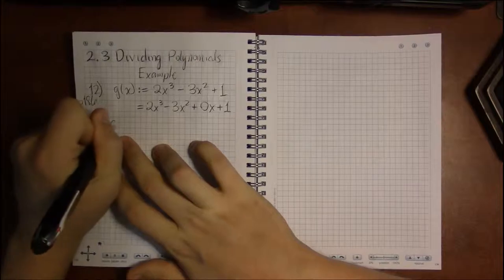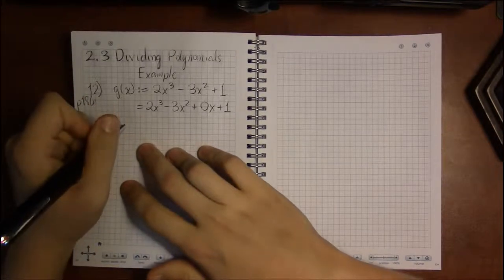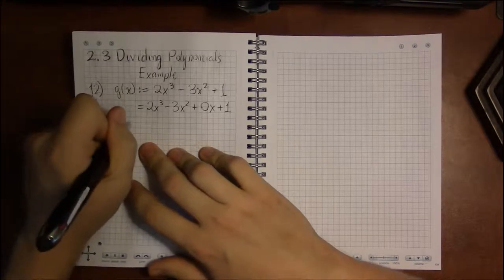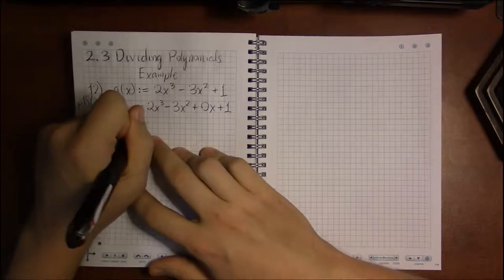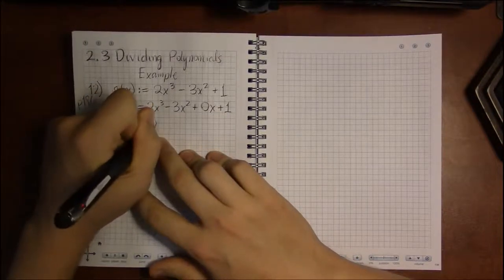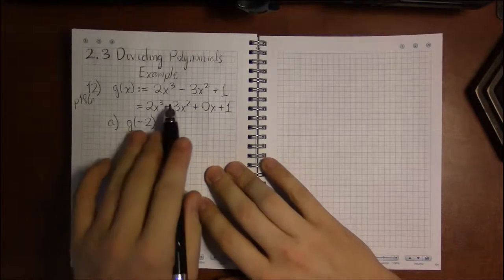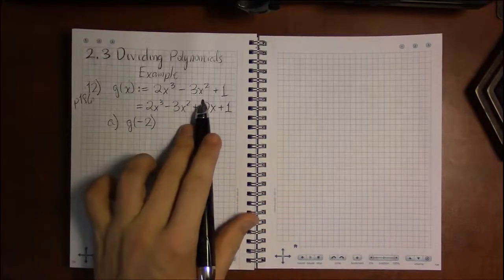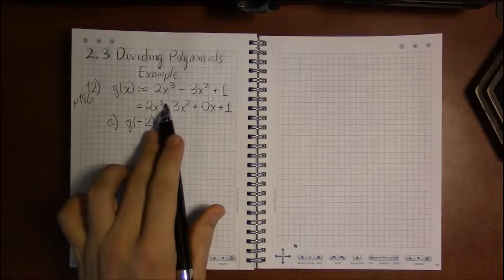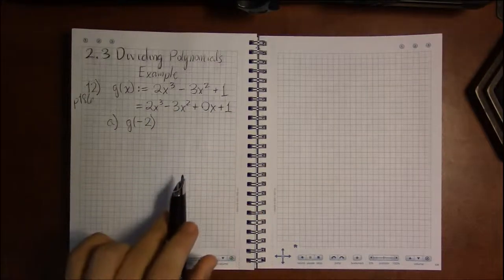Now for part A, in fact for all these parts, we're going to be evaluating g at various points. One way to do this is to just plug minus 2 in for x at every position here and then do the computations.